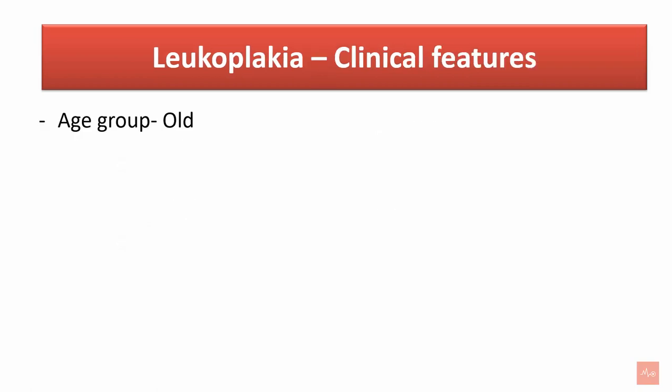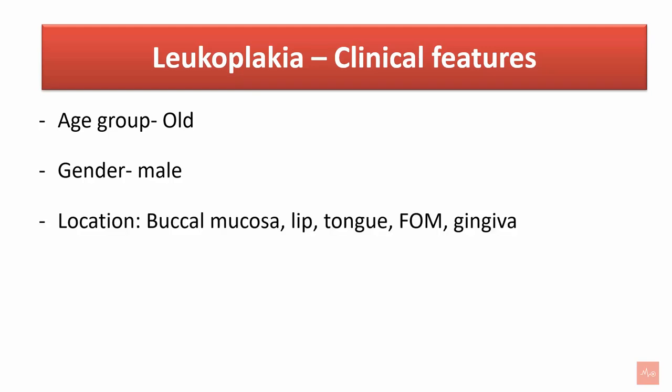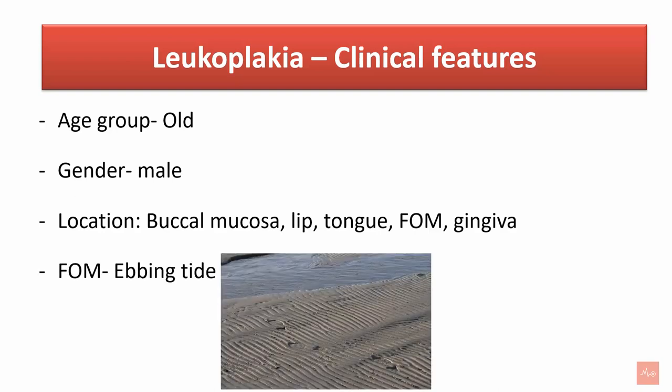Leukoplakia is commonly seen in the older age group with a slight male predilection. Common locations are buccal mucosa, lip, tongue, floor of mouth, and gingiva. Homogeneous leukoplakia on the floor of mouth is classically described as an ebbing tide pattern due to its appearance.